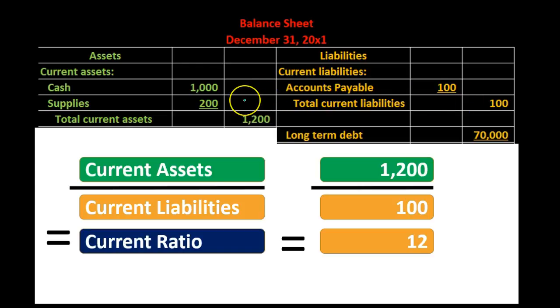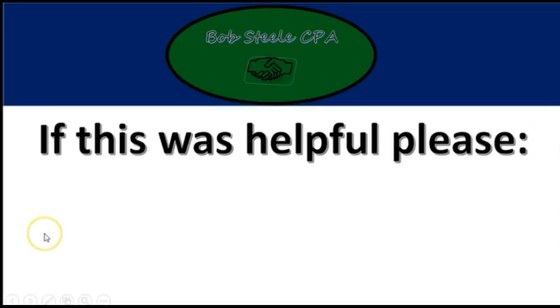You might be saying, well, supplies isn't cash, but it's something that's going to be consumed. We're comparing the more liquid assets to the debt that's going to be due soon. In that case, we're saying that the debt can be paid over 12 times.